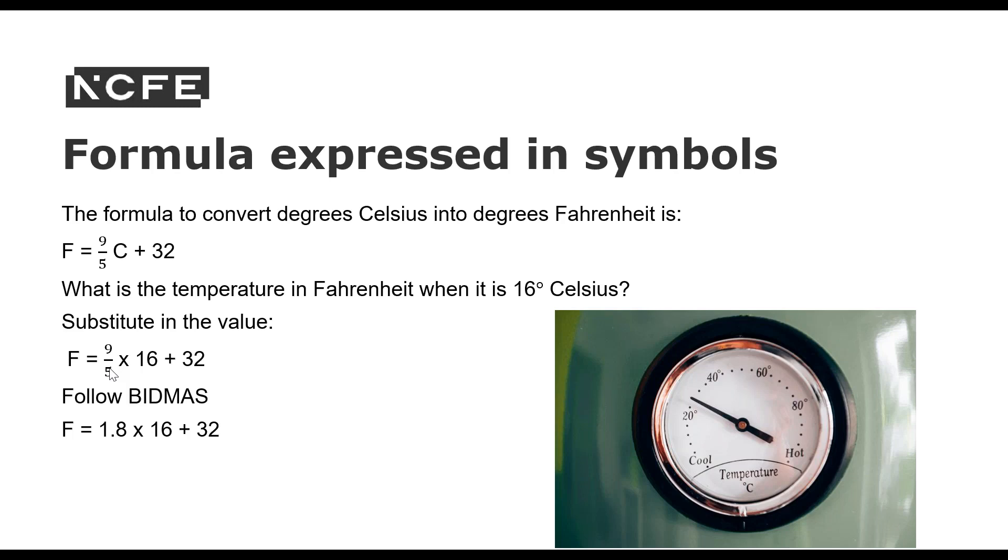So 9 divided by 5. So when we see a fraction, we know that that's basically 9 divided by 5. If we didn't have a calculator, we might do this in a different way. But we've got a calculator. So 9 divided by 5 is 1.8. Then we've got times 16 plus 32. And then we do the multiplication 1.8 times 16. And then we add 32. And our answer is 60.8 degrees, which we may well round up to 61 degrees. But the question doesn't tell us to do any rounding. So we can leave that one there.